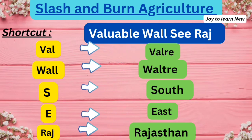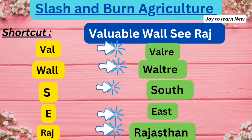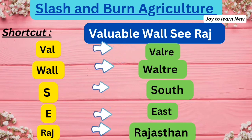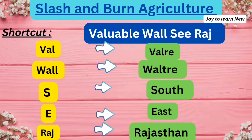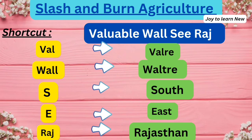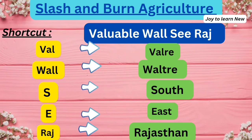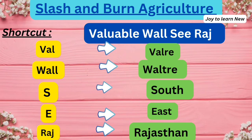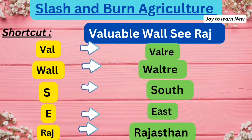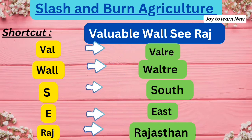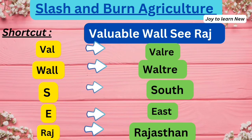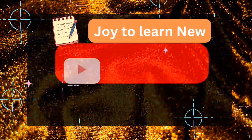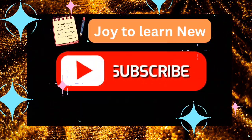The next shortcut is 'Valuable wall C Raj.' Val refers to Valer, S refers to South, E refers to East, and Raj refers to Rajasthan. So Valer is the name for slash and burn agriculture in south-eastern Rajasthan.